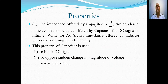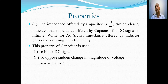The properties of the capacitor include that the impedance offered by a capacitor is 1/(jωC), which clearly indicates that the impedance offered by a capacitor for a DC signal is infinite. That is, the capacitor does not allow a DC signal to pass through it, while for an AC signal the impedance goes on decreasing with frequency. This property of the capacitor is used to block DC signals.